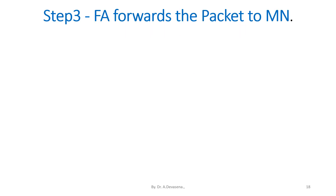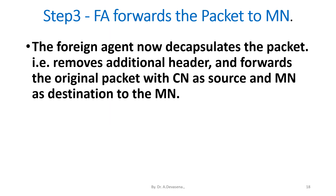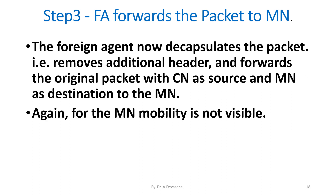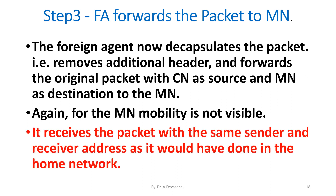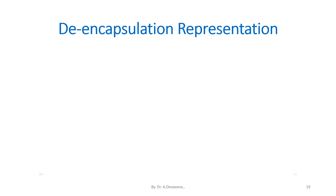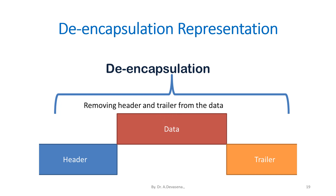Step 3 detail: FA forwards the packet to MN. The foreign agent decapsulates the packet — removes the additional header — and forwards the original packet with CN as source and MN as destination to the MN. For the MN, mobility is not visible; it receives the packet with the same sender and receiver addresses as it would in the home network. De-encapsulation: the header and trailer attached to the data are removed in this process.